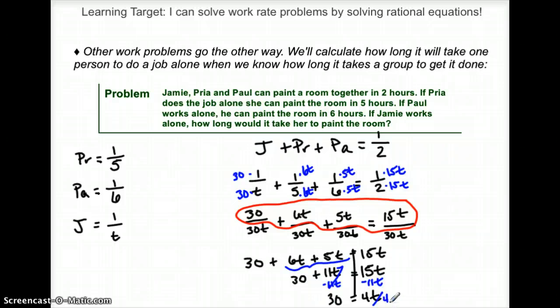And so I'm going to get 30 equals 4T, which I'm going to divide by 4. So T is going to equal 7.5.